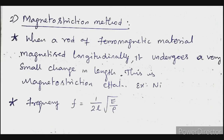Next is the magnetostriction effect. When a rod of ferromagnetic material is magnetized longitudinally, it undergoes a very small change in length — this is the magnetostriction effect. For example, nickel is a ferromagnetic material. The compression or elongation produced is very small.